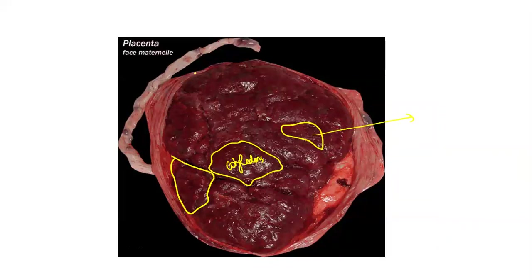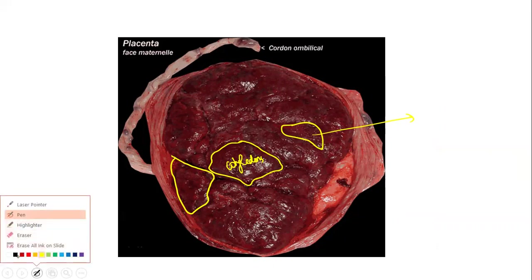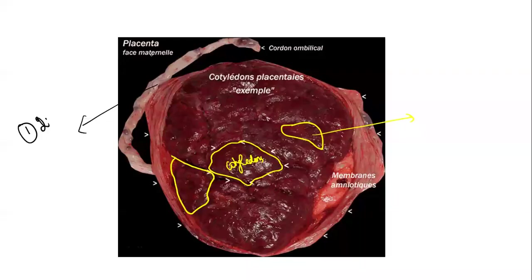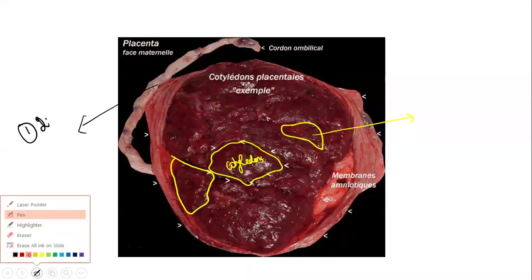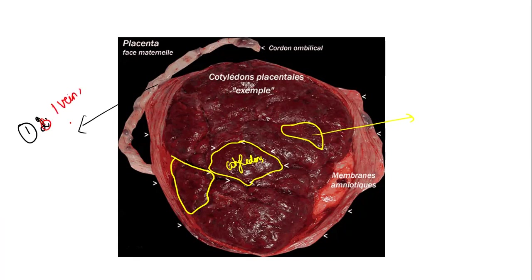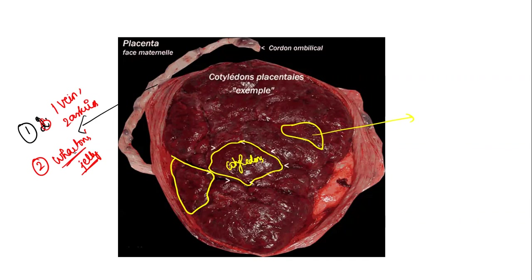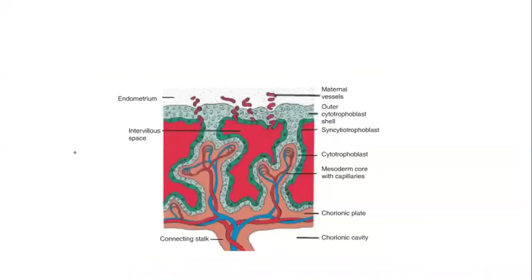Regarding the umbilical cord: it is derived from the connecting stalk and contains two arteries and one vein, along with Wharton's jelly — a mucopolysaccharide structure. Initially the umbilical cord also contains the vitelline duct and intestinal loops, but as the abdomen develops the intestinal loops return to the abdomen, leaving only the vessels and mucopolysaccharide.